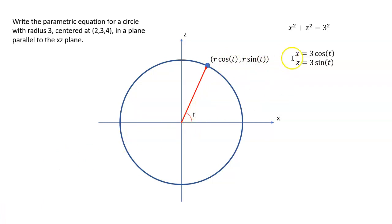And that lets us create our parameterization. x equals r, and our radius here is 3, so x is 3 cosine t, and z is 3 sine t. So we're going to use a cosine and sine pair to create our rotation, to create our circle.